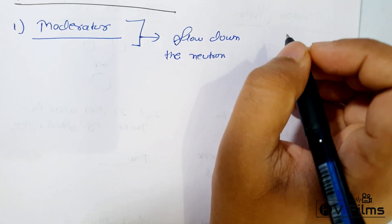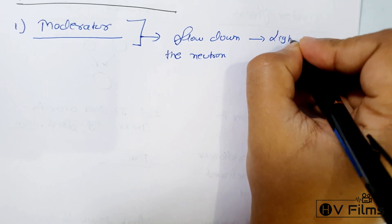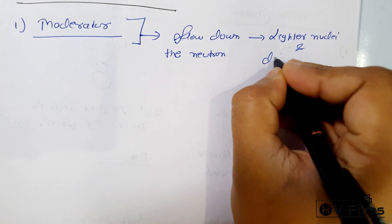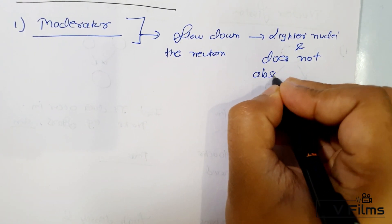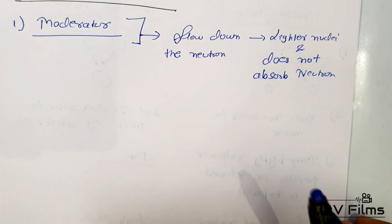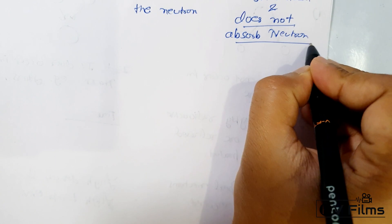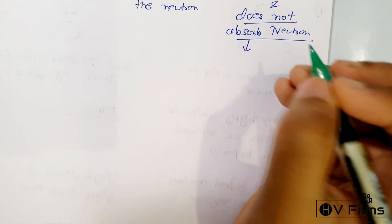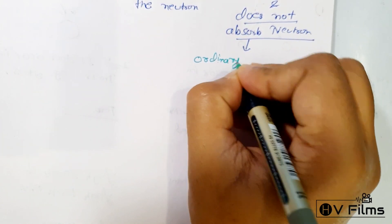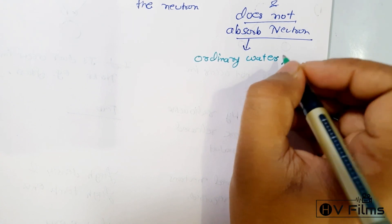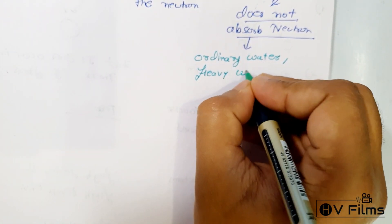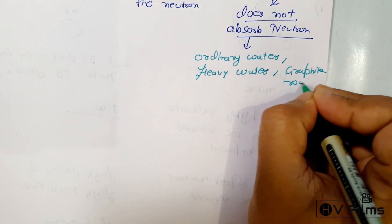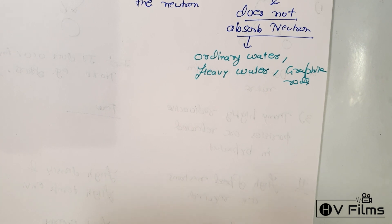Moderators are generally atoms with lighter nuclei. They do not absorb neutrons — that is the important point which distinguishes the moderator from the control rods. Examples of moderators include ordinary water, heavy water, and sometimes graphite rods.